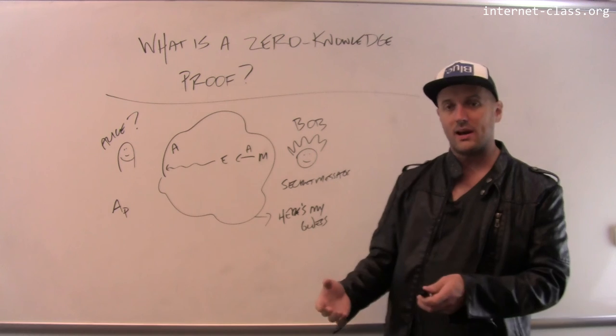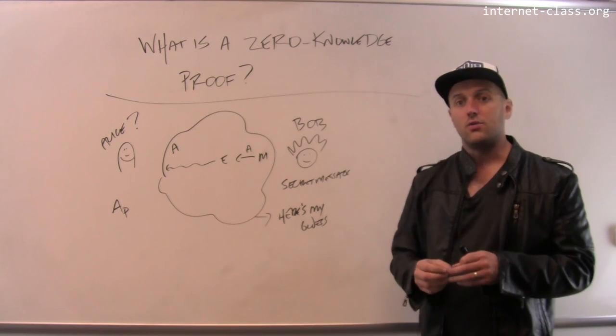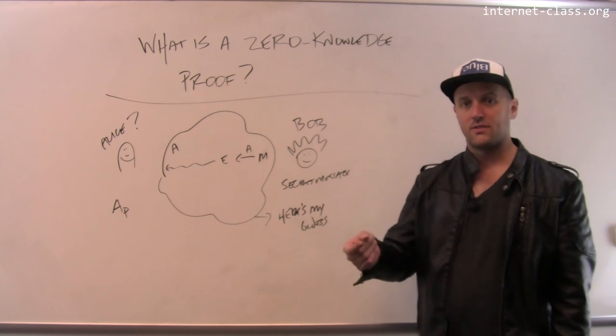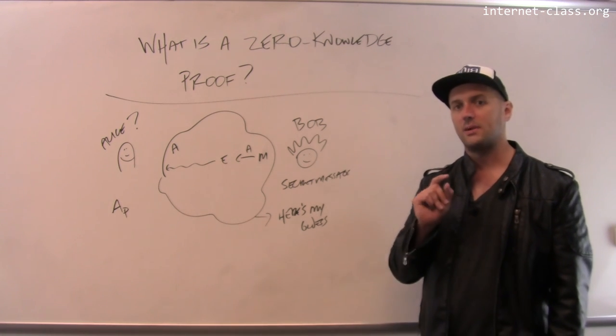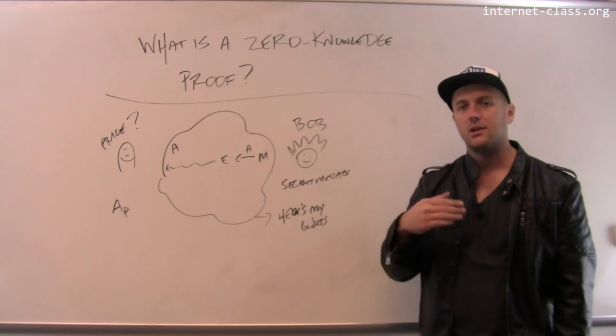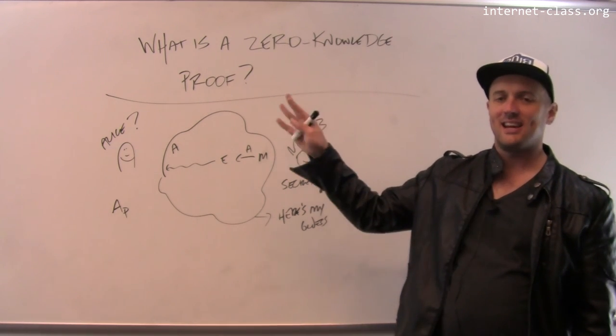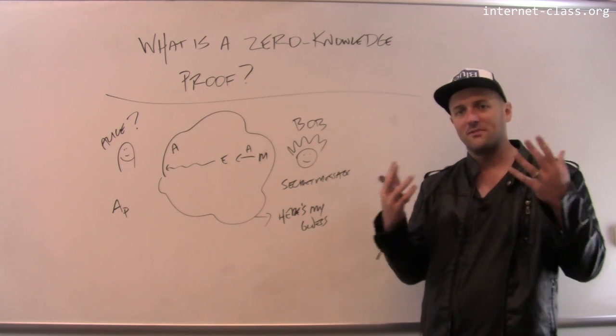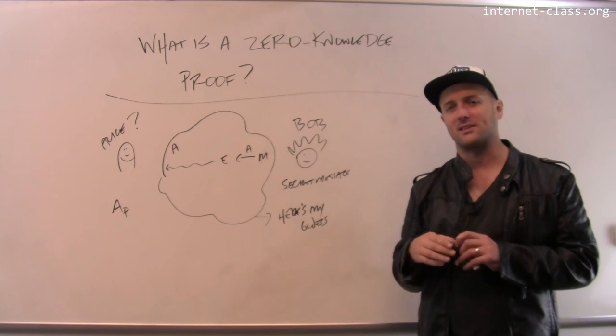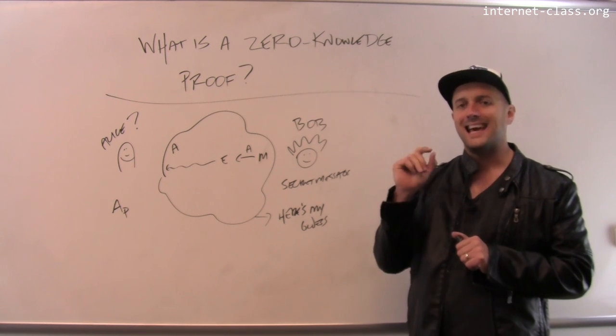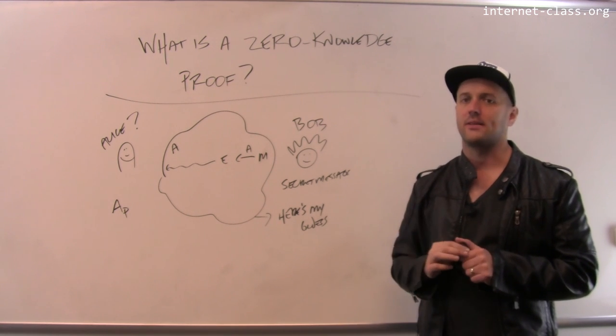In other zero-knowledge proofs, it's the same thing. You reveal that you can do something that only a person that was in possession of that secret information could do, but you don't reveal the secret information. So, again, a really, really fascinating and to me always very mysterious aspect of cryptography, this idea that I can prove something to you without revealing any information about that thing itself.